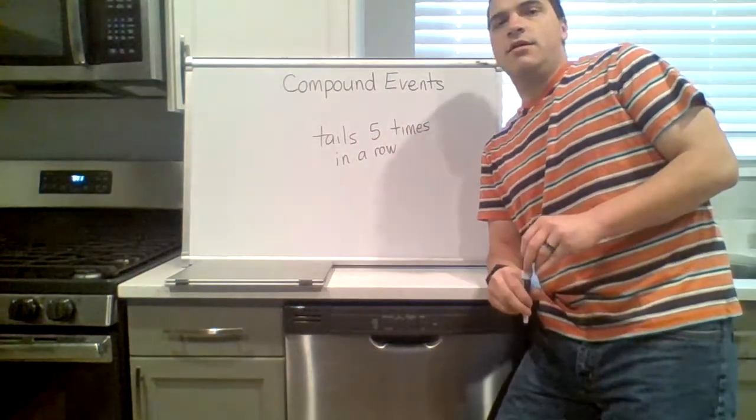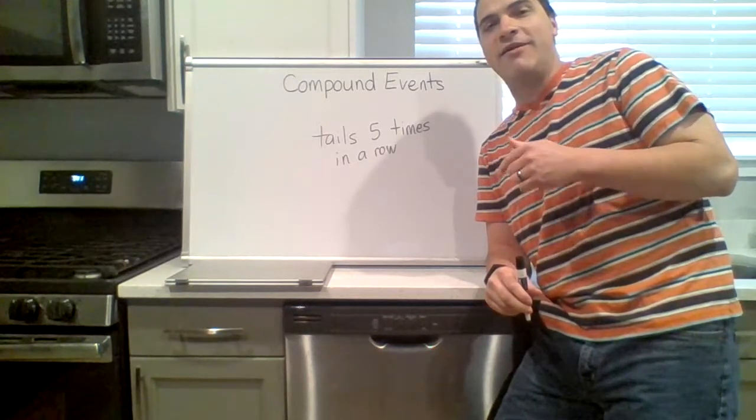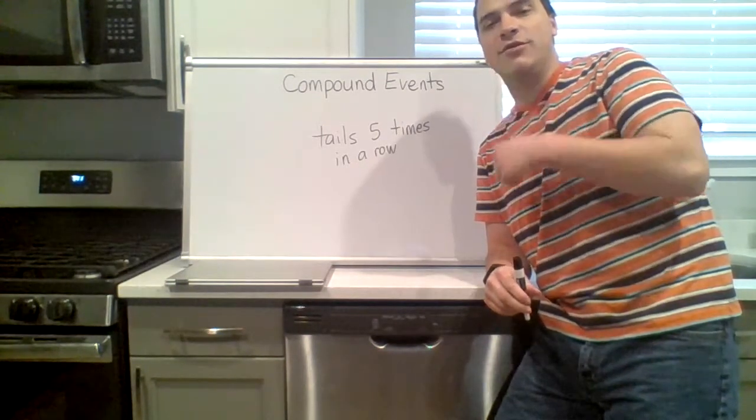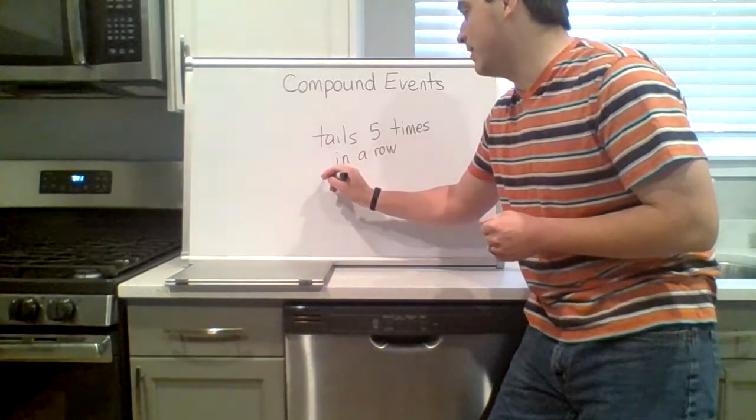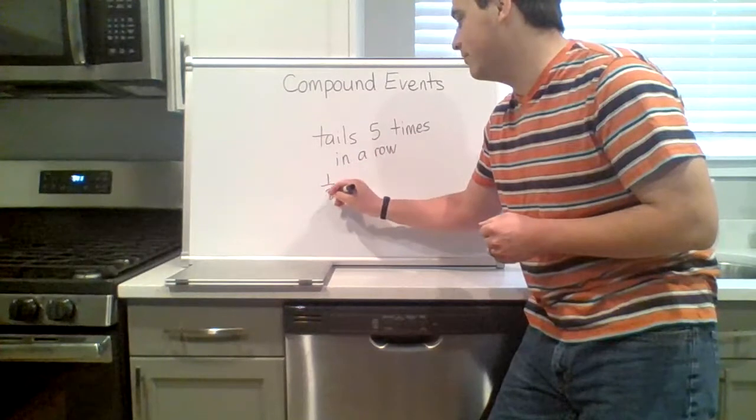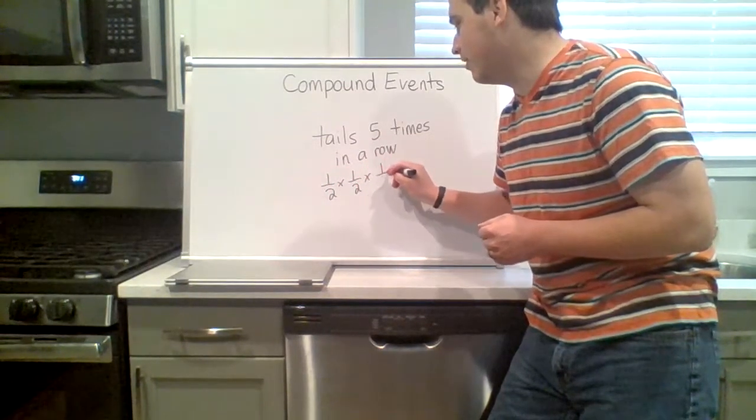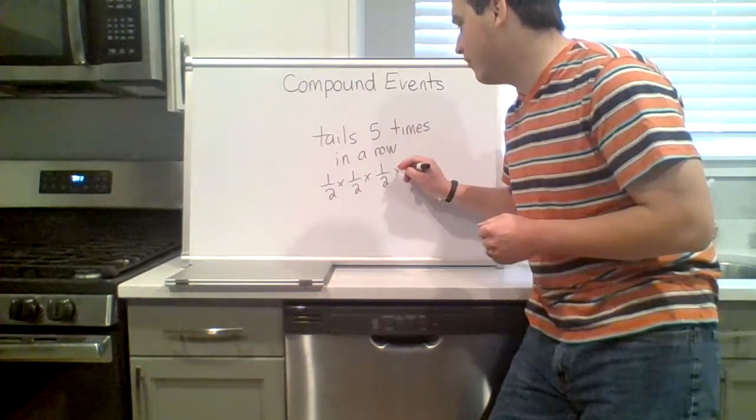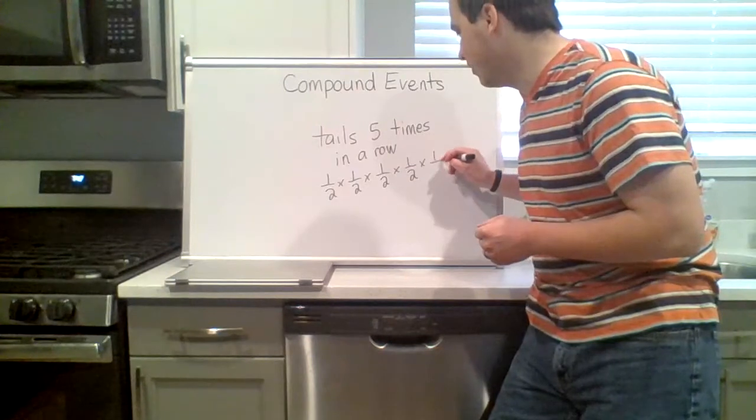Okay, so this is five events versus two, but the same process. The probability of the first coin flip being tails is one half. The second one being tails is one half, third one being tails is one half, fourth one being tails is one half, the fifth one being tails is one half.